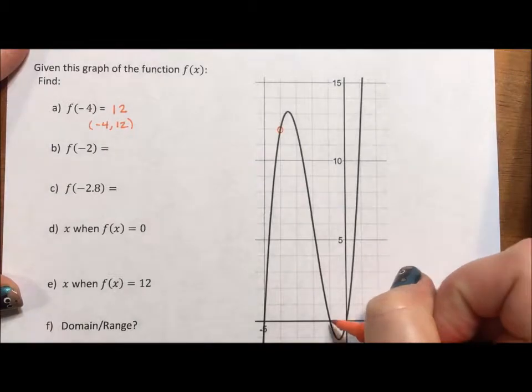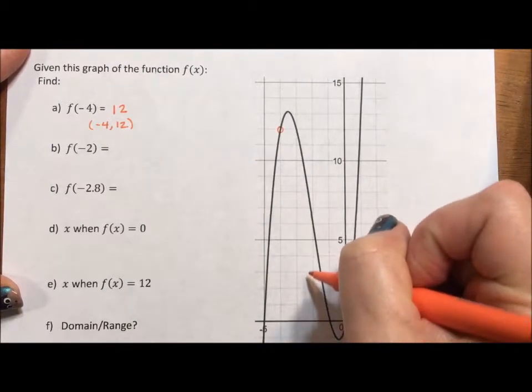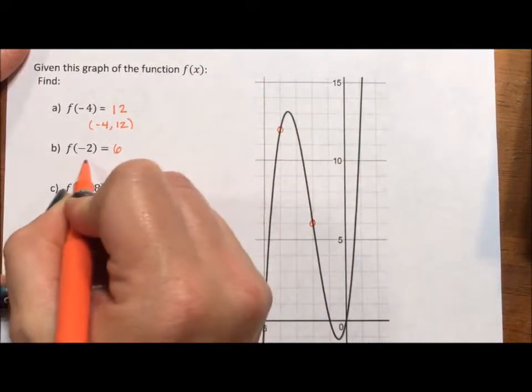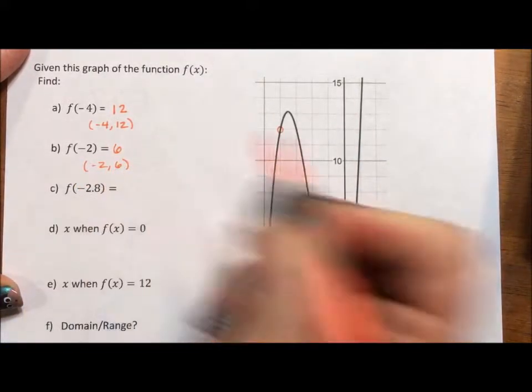f of negative 2, 0, negative 1, negative 2. Negative 2 crosses right here at 6. In other words, negative 2, 6 is a point on this graph.